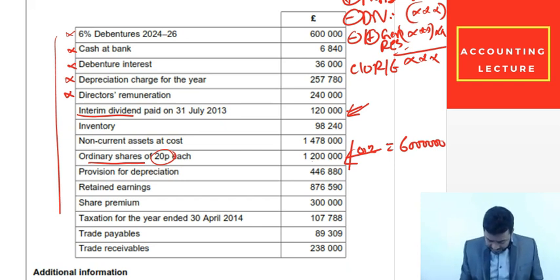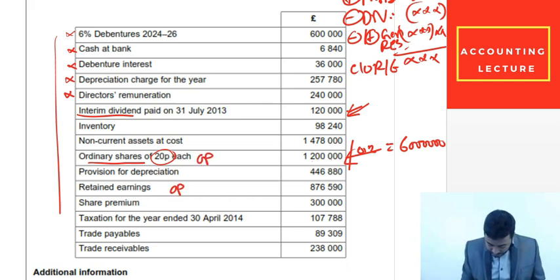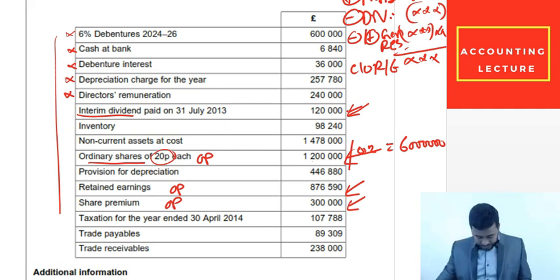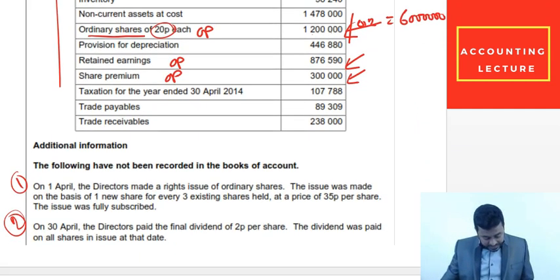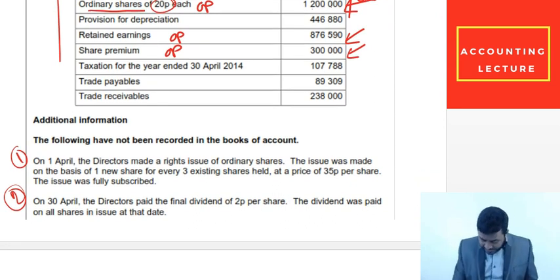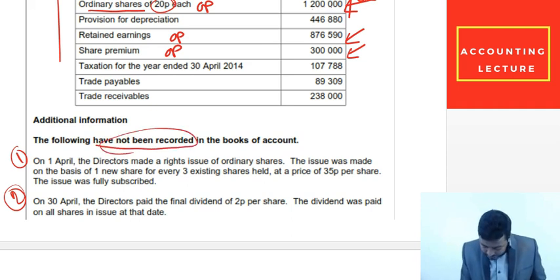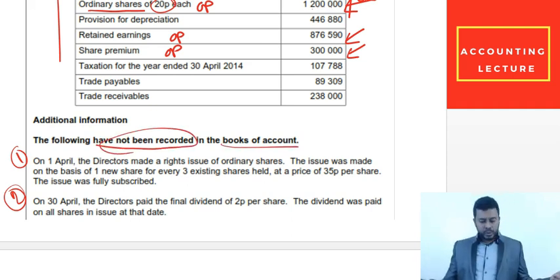Provision for depreciation doesn't go in retained earnings. The opening retained earnings figure is given and we need to take it into account. Share premium is also an opening figure and we'll take it into account. Taxation, payables, and receivables — no, we don't need those. Now let's deal with the two adjustments — items that have not been recorded in the books of account and we will record them.